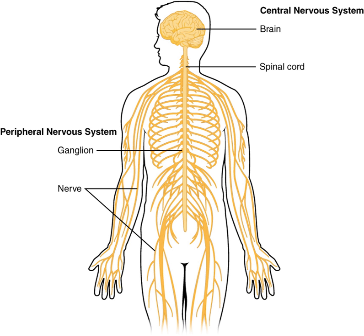The spinal cord is derived from the posterior or caudal portion of the neural tube. As a vertebrate grows, these vesicles differentiate further still. The telencephalon differentiates into, among other things, the striatum, the hippocampus, and the neocortex, and its cavity becomes the first and second ventricles. Diencephalon elaborations include the subthalamus, hypothalamus, thalamus, and epithalamus, and its cavity forms the third ventricle.